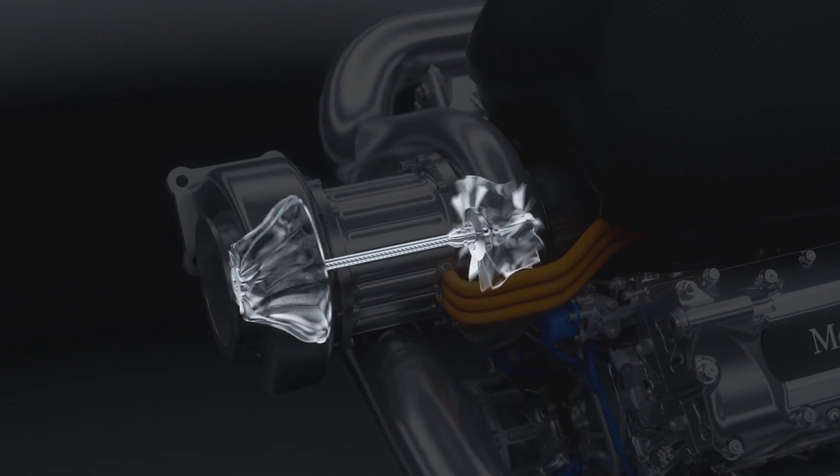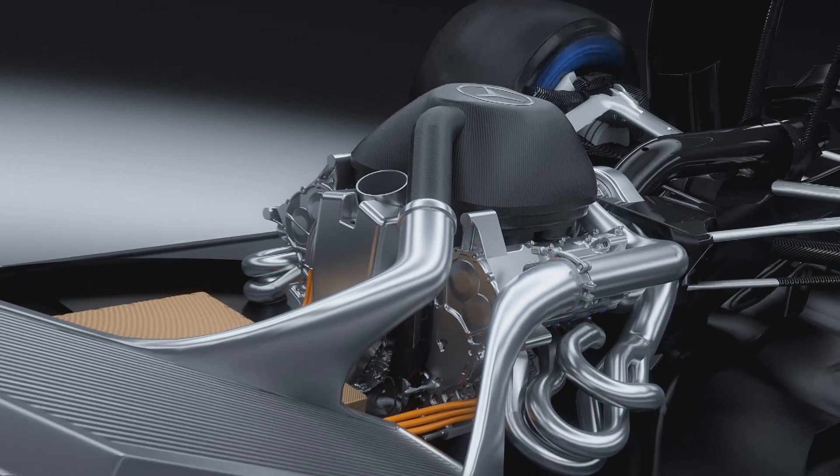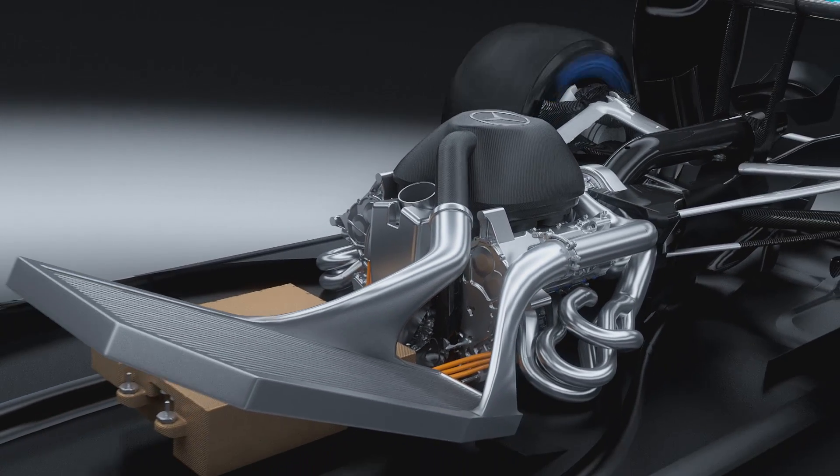This turbocharger uses the otherwise wasted exhaust gas to push more fresh air into the combustion chamber for enhanced fuel efficiency. Before reaching the air intake, the compressed air passes through an intercooler to increase its power density.